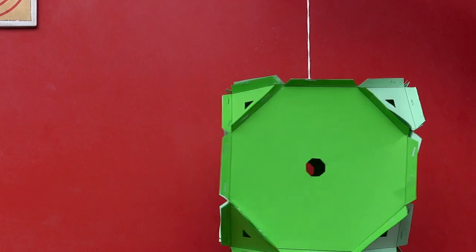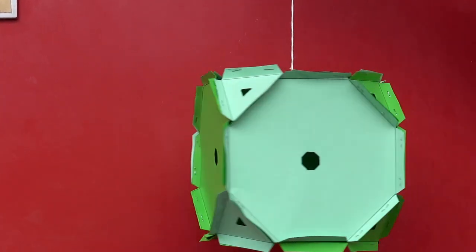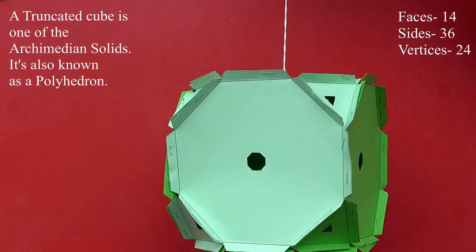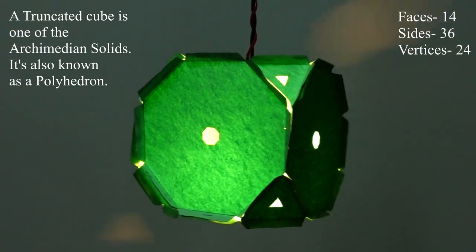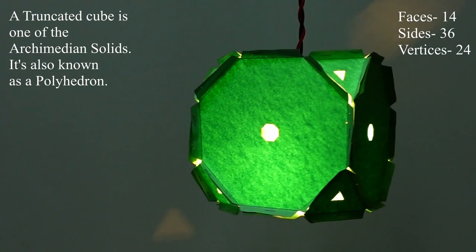Thus when all the flaps are joined to the side flap we see the truncated cube formed. This truncated cube has 14 faces, 36 sides, and 24 vertices. It is a polyhedron.